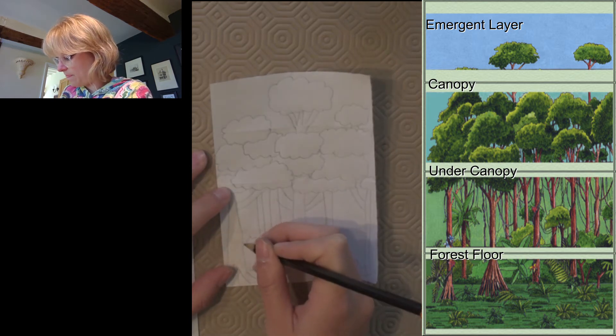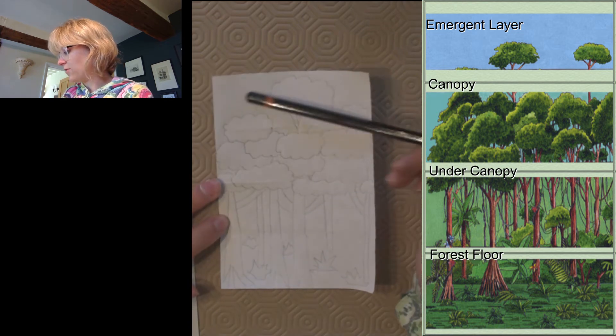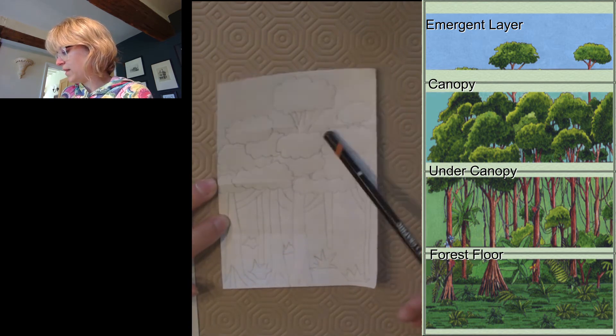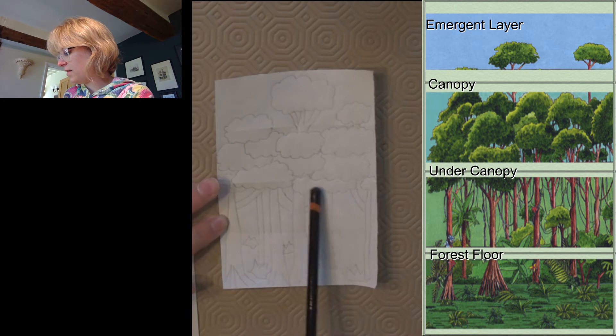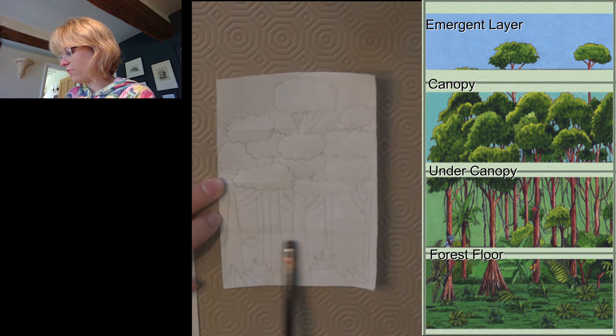So now I've drawn out all four of my layers. I've got my emergent layer at the top, the canopy, the understory, and then the forest floor.